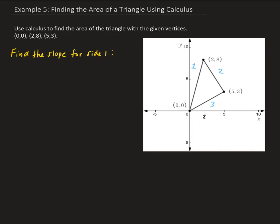Since side 1 is going through the origin and (2,8), that means our slope for that line is going to be 8 over 2, which is 4. For our equation, since it's going through the origin, it has a y-intercept of 0. So we're left with y equals 4x.